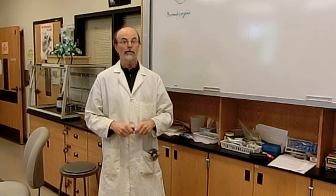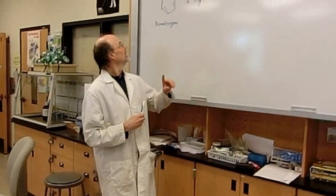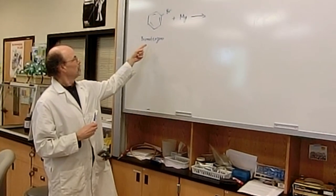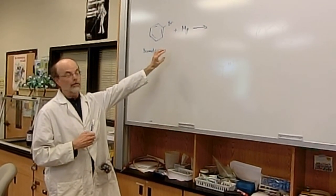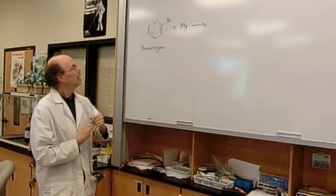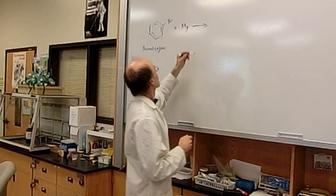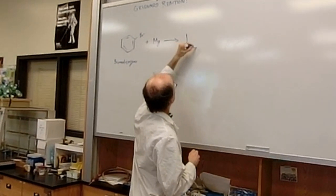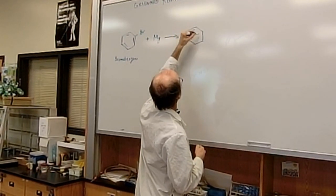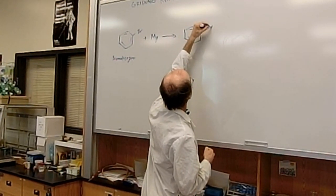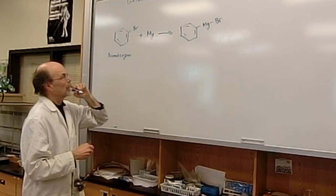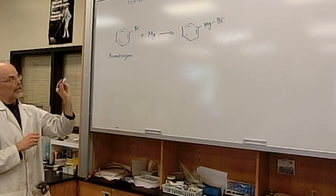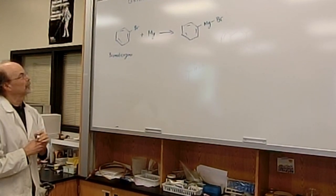Welcome to the Grignard Reaction for Chem 252. Today you'll be starting off with bromobenzene, a liquid. We're going to react it with magnesium metal, which is very unusual to have organics react with metal, and we're going to make from this what we call a Grignard reagent where the magnesium will insert itself in between the carbon and the halogen. This is known as the Grignard reagent, and this is what most of this will be about, is creating this species.